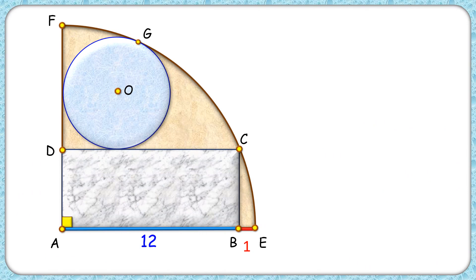Let's check the solution. Here the length AE, that's the radius of the quadrant, is 13 cm, and thus the length AC will also be 13 cm. In triangle ABC, applying Pythagoras theorem, we will get BC as 5 cm.